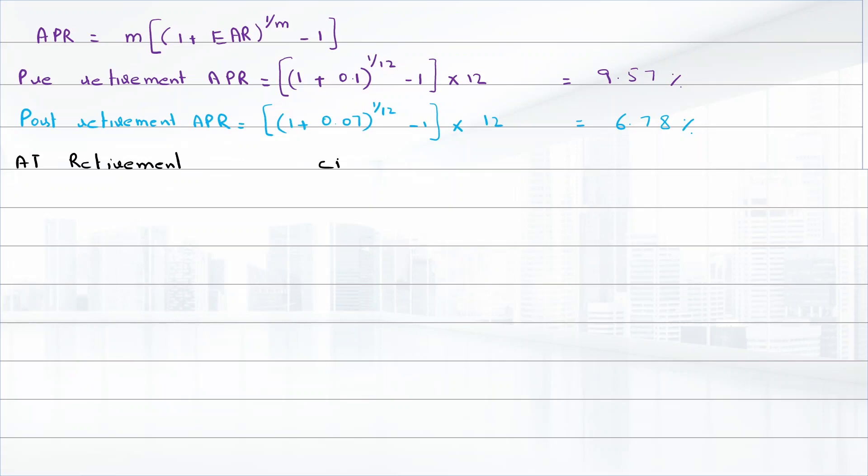At retirement he needs cash flow of $16,000 and it will be required for 25 years. As this is post-retirement, 6.78% will be the interest rate. We have to find the present value of the annuity.